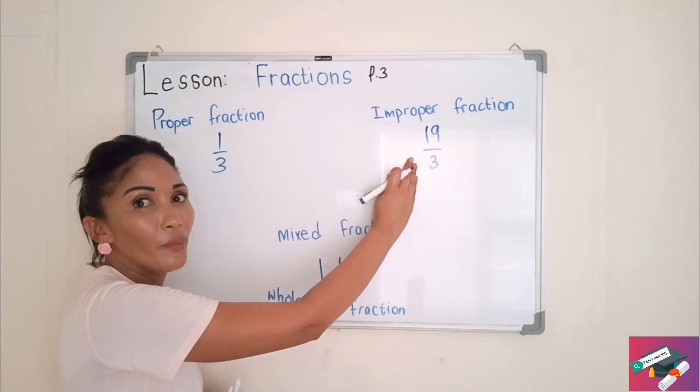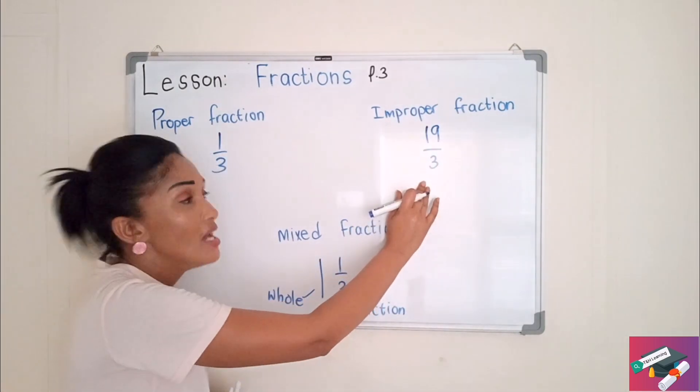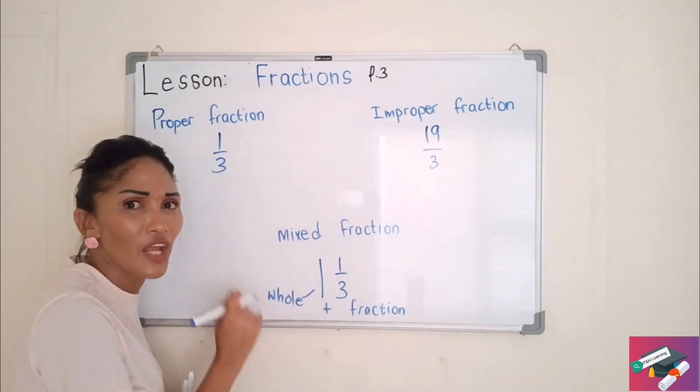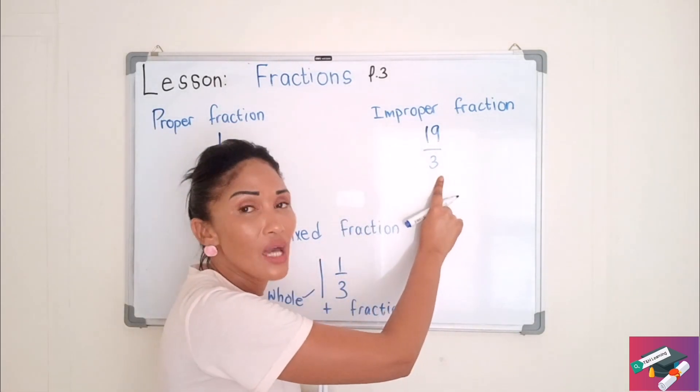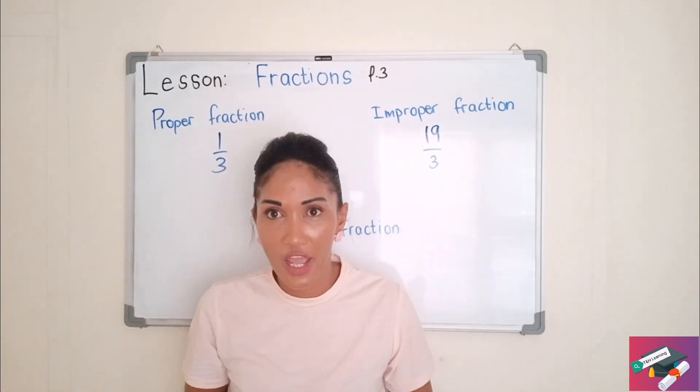Now in this example, we have 19 over 3, 19 thirds. So when I have 19 thirds, what do I do to get my mixed fraction? I need to make this a proper fraction. Because remember, we work with fractions, proper fractions.